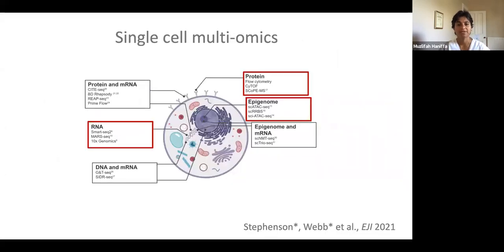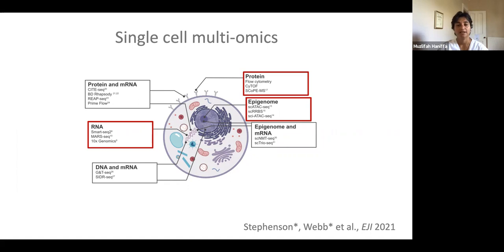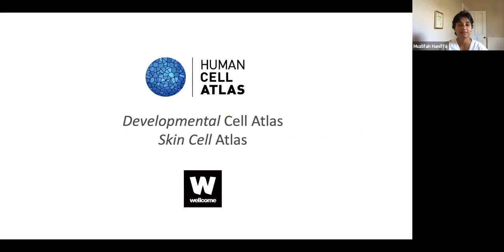What can we measure at single cell resolution? When the field began, it was very much protein and also RNA. But these days, you can combine the different types of parameters from a single cell, and the things that you can measure are increasing exponentially in terms of numbers of individual parameters detected, but also cells that can be analyzed.